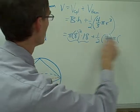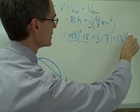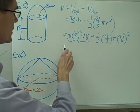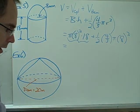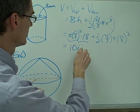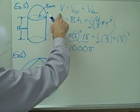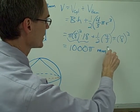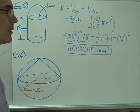The radius of the hemisphere is 8, so I need 8 cubed. With all my numbers filled in, I punch those into my calculator and get 1,000 pi. My units are millimeters, so that's 1,000 pi cubic millimeters.